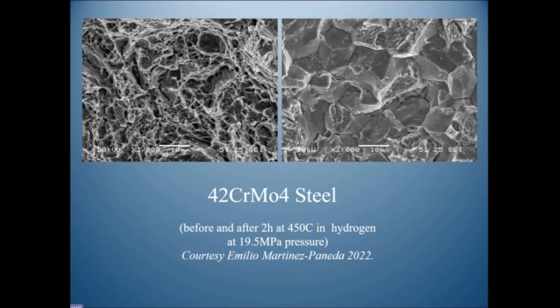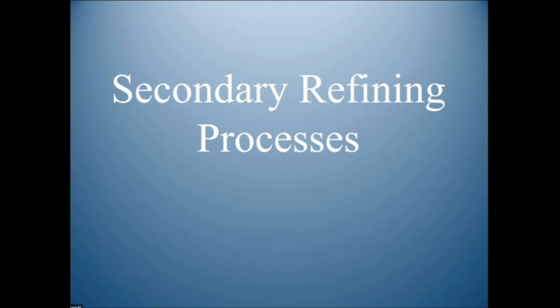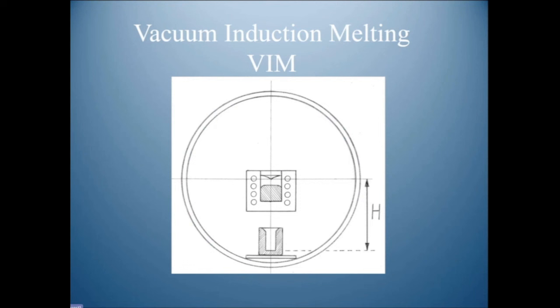Let me talk briefly about secondary refining processes and vacuum casting. Here is a vacuum casting setup — a beautiful vacuum furnace, but it pours vertically into a mold. That is a disaster; you are going to get low properties.